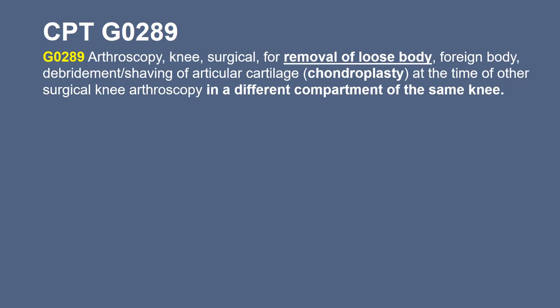Before we go over scenarios, we're going to talk about CPT code G0289. This is a HCPCS code that Medicare came out with, but it's pretty much used with all insurances. The description of G0289 is arthroscopy knee surgical for removal of loose body, foreign body, debridement, or shaving of articular cartilage (chondroplasty) at the same time as another surgical knee arthroscopy in a different compartment of that knee.